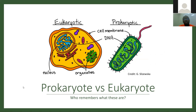If your answer was the presence of a nucleus and membrane-bound organelles, then you are absolutely correct. A eukaryotic cell has both a nucleus and membrane-bound organelles. In contrast, prokaryotic cells do not have membrane-bound organelles — their organelles lack a membrane-bound structure.